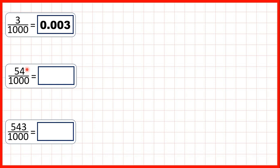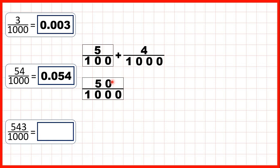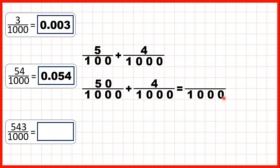Now let's take a closer look at 54 thousandths, which was 0.054. You'll notice that the five is written in our hundredths column and only the four is in our thousandths. Five hundredths is equivalent to 50 thousandths. That's because we use multiplication to find equivalent fractions: one hundred times ten is a thousand, and what we do to the denominator we do to the numerator, so five times ten is 50. We can then add the four thousandths with a common denominator, and 50 plus 4 is 54. That's why we write 54 thousandths with five in our hundredths place value column.